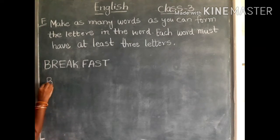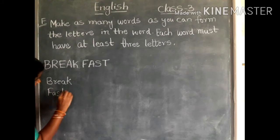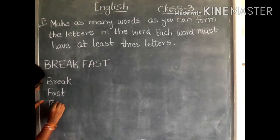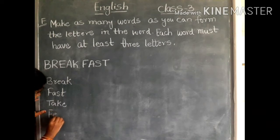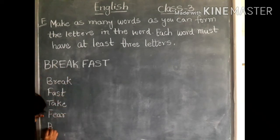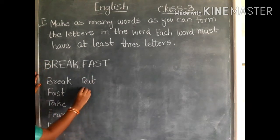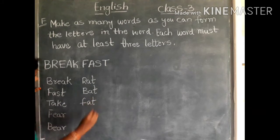See here, we write 'break' — B-R-E-A-K — break. F-A-S-T — fast. By using the letters in this word you can make more: take — T-A-K-E — take. Next, fear — F-E-A-R — fear. E-A-R — ear. Next, bear — B-E-A-R — bear. R-A-T — rat. V-A-T — vat. F-A-T — fat.